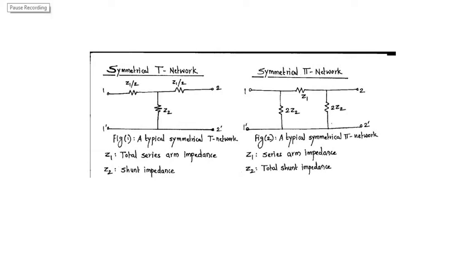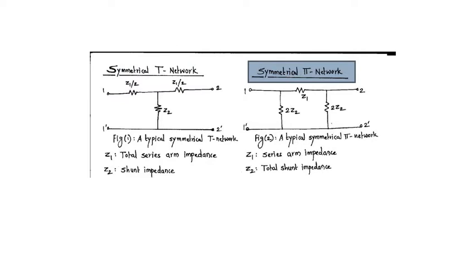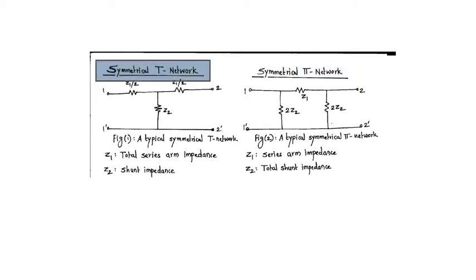Hello students. In this session we will discuss about symmetrical T network and symmetrical pi network firstly, and then we will derive an expression for characteristic impedance Z0 in case of symmetrical T network as well as in case of symmetrical pi network. Let's start firstly with the understanding of what we mean by symmetrical T network and symmetrical pi network.